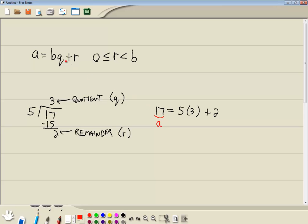This would be our A, and this would be our B, this would be our Q, and this would be our R.